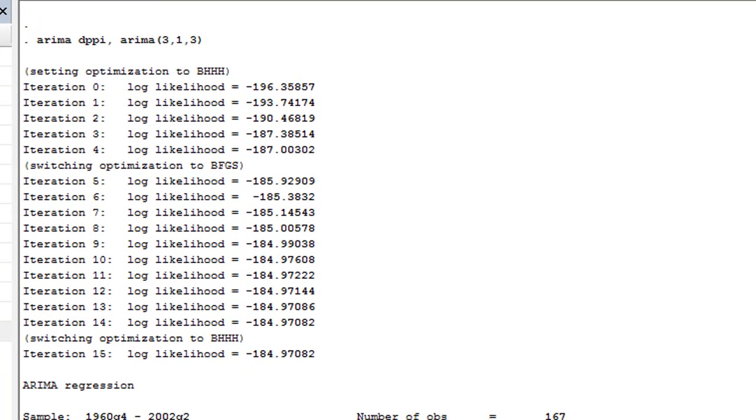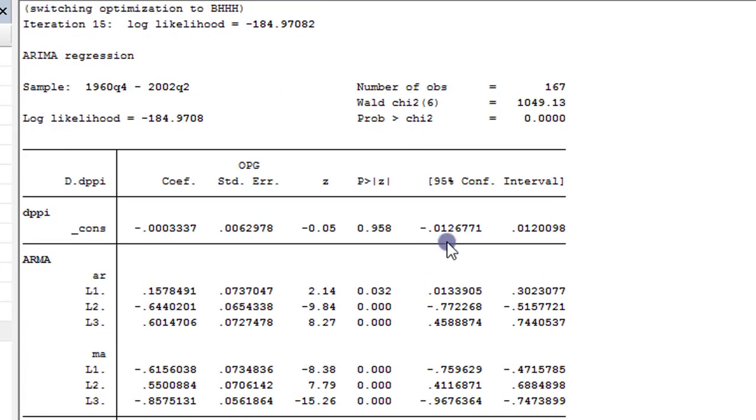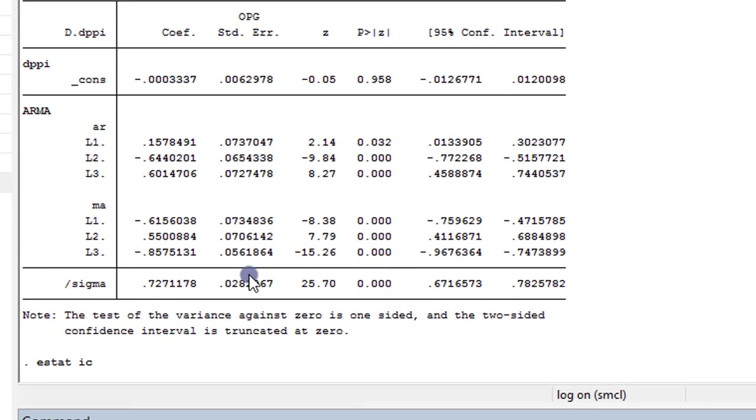So taking you back to the chosen model, which is ARIMA 3,1,3. This is the result again. And here we see the output. All the six coefficients are significant. The three coefficients of the AR components are significant, and the three coefficients of the MA components are significant. Although the volatility is the lowest among the six models that we estimated. So sigma here represents the volatility of the variable.